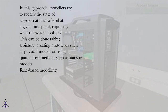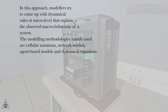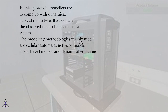In rule-based modeling, modelers try to come up with dynamical rules at micro level that explain the observed macro behavior of a system. The modeling methodologies mainly used are cellular automata, network models, agent-based models, and dynamical equations.